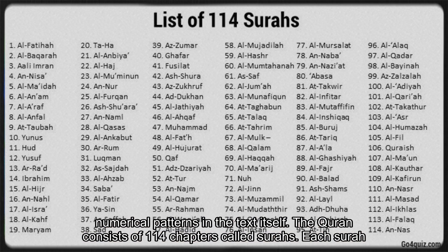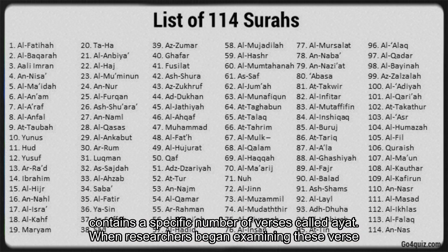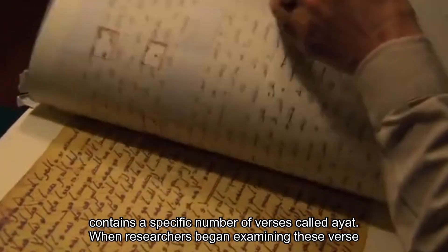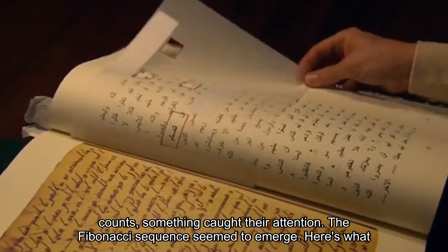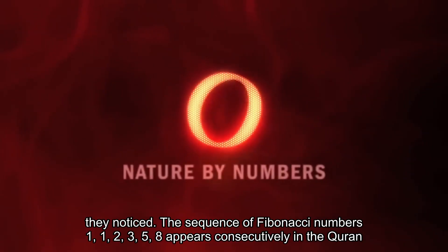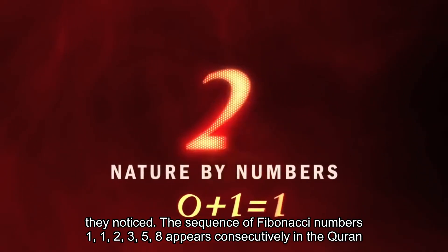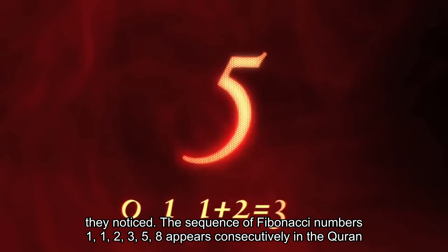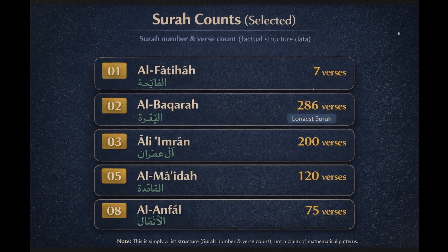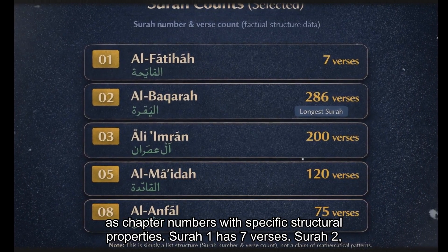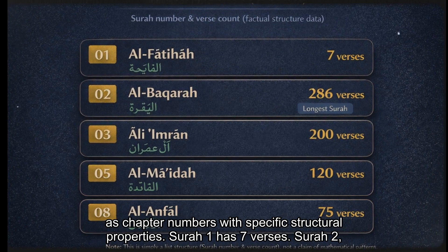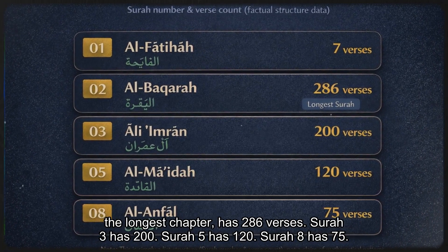The Quran consists of 114 chapters, called surahs. Each surah contains a specific number of verses, called ayat. When researchers began examining these verse counts, something caught their attention — the Fibonacci sequence seemed to emerge. The sequence of Fibonacci numbers 1-1-2-3-5-8 appears consecutively in the Quran as chapter numbers with specific structural properties. Surah 1 has 7 verses. Surah 2, the longest chapter, has 286 verses. Surah 3 has 200.